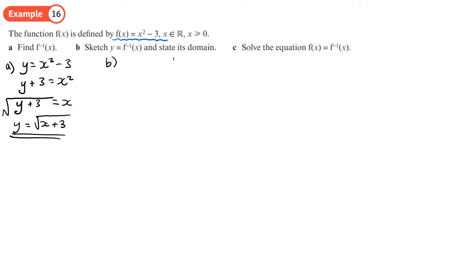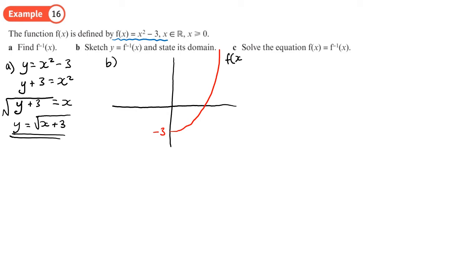For part B, sketch the inverse. It's often easier to sketch the original graph first, then reflect in y = x. The original f(x) = x² - 3 is a u-shaped quadratic shifted down to -3, only for x > 0. Reflecting this in y = x gives the inverse graph. The turning point at (0, -3) maps to (-3, 0), so the inverse starts at x = -3.